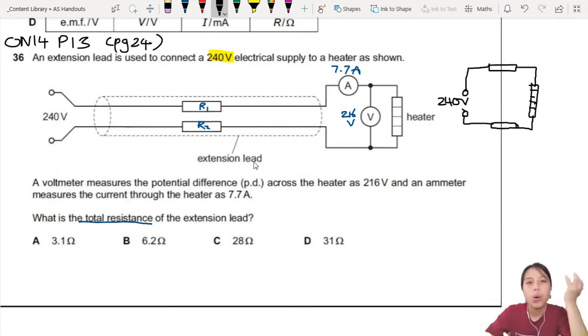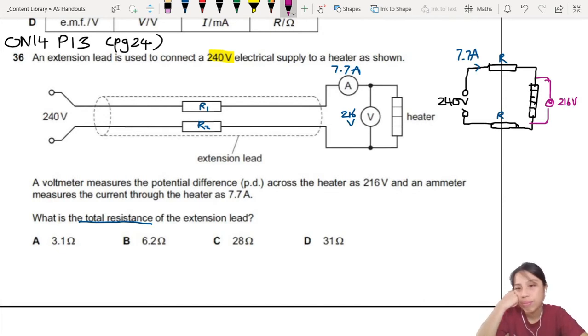What do we have here? We have current measured flowing through at 7.7 amps. This one has resistance, don't know what it is. Then your heater has a potential difference of 216 volts, so the voltmeter here is 216 volts.